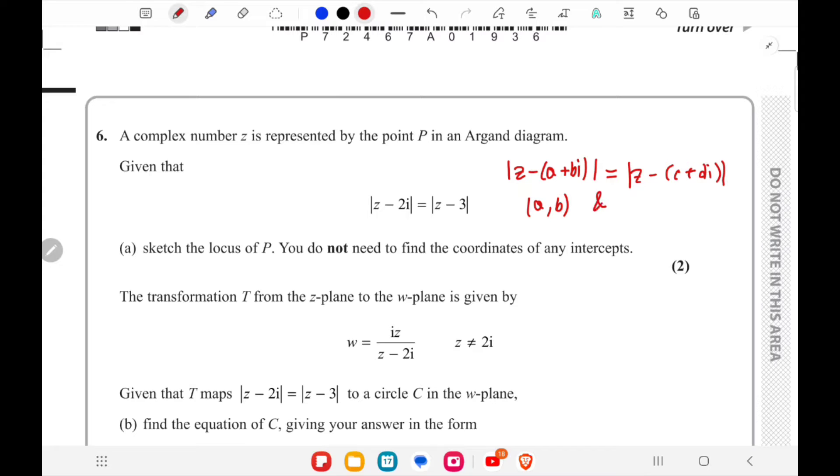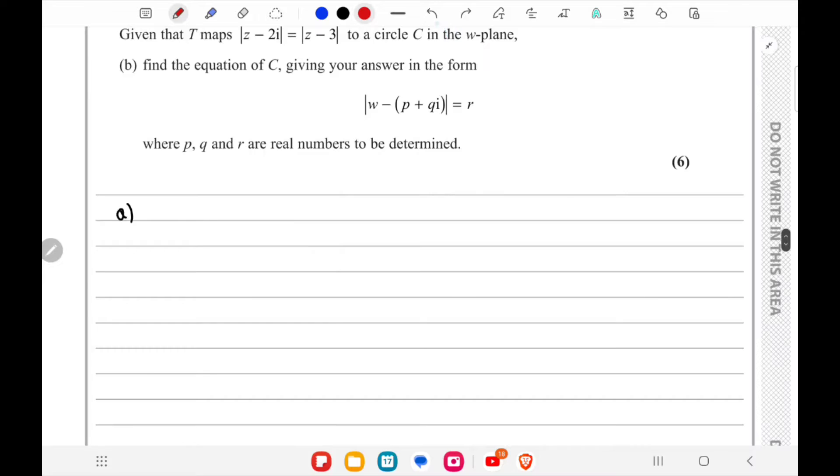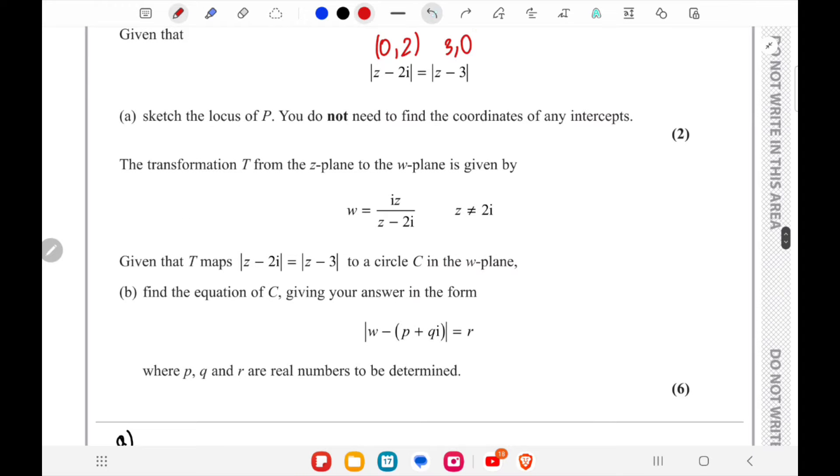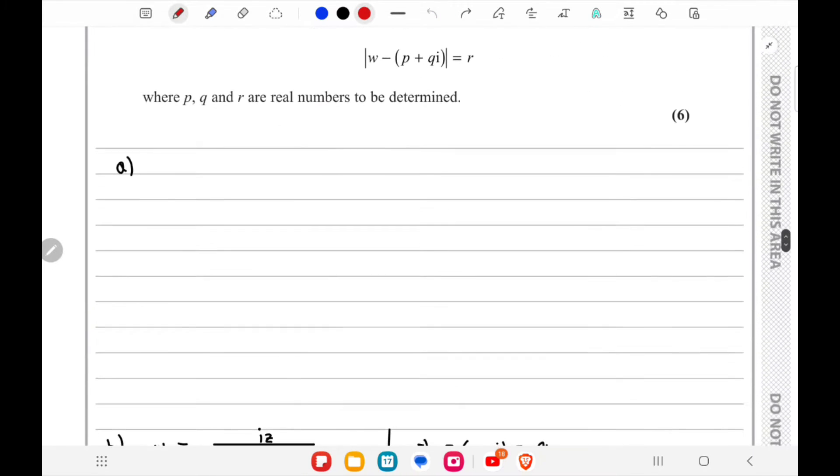(0,2) for this and (3,0) for this. So let's just draw our axes. This is the imaginary axis and this is the real axis.